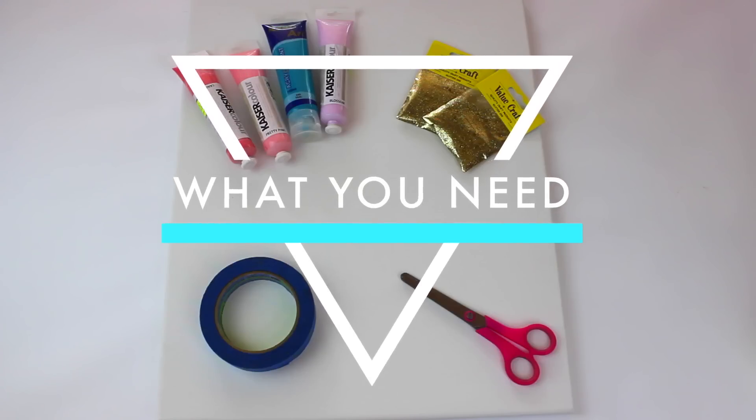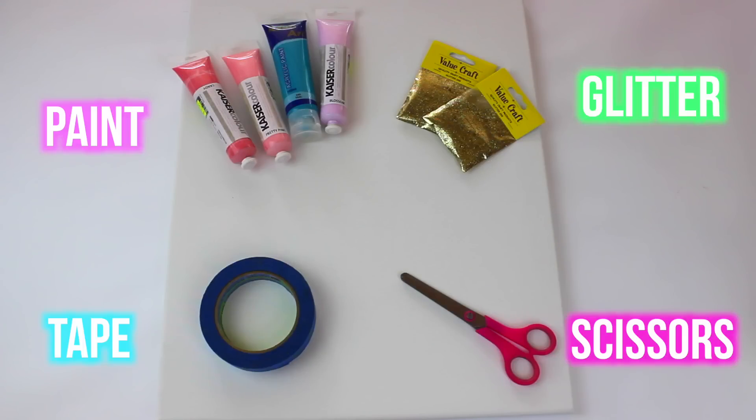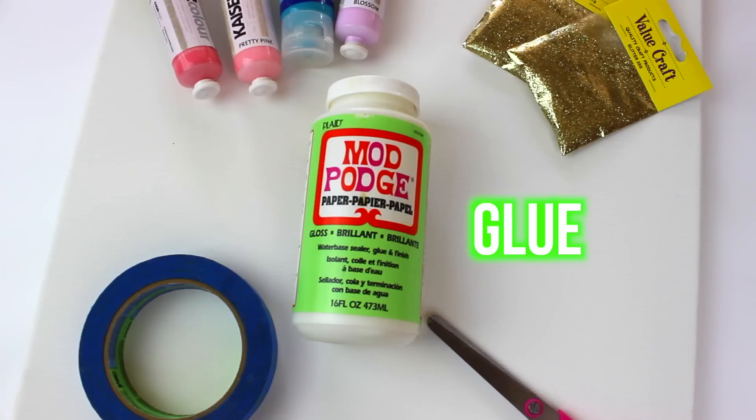So what you need to create this geometric canvas is some paint, tape, scissors, glitter, a paintbrush and a canvas and also some glue. I used Mod Podge.